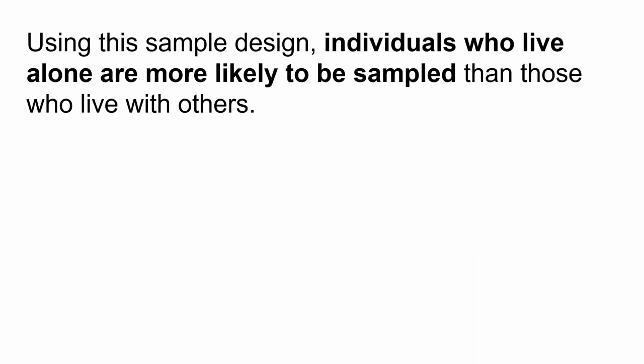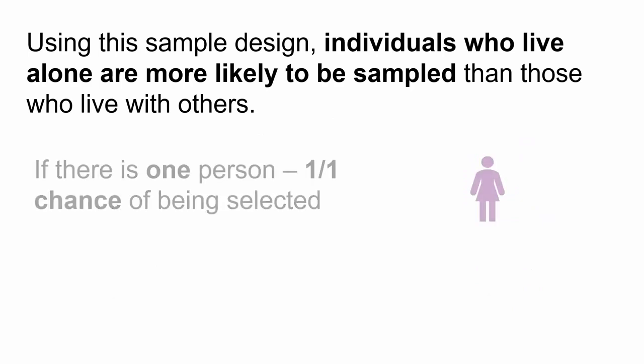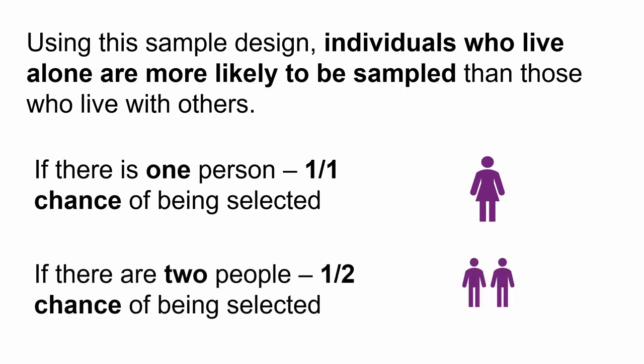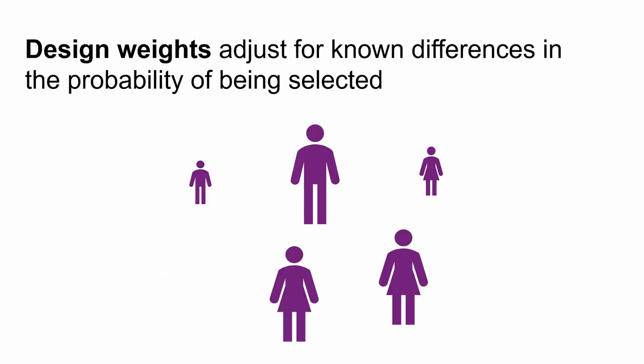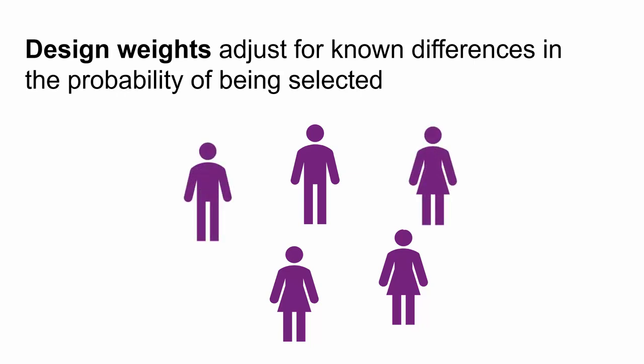Using this sample design, individuals who live alone are more likely to be sampled than those who live with others. For example, if there is one person in a household, they have a one-in-one chance of being selected. However, if there are two people in a household, they have a one-in-two chance of being selected. By using these known differences in the probabilities of being selected, we can calculate design weights to adjust the sample to make it better represent the population.